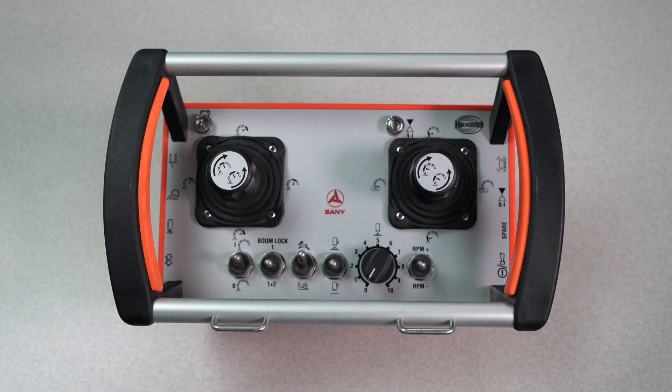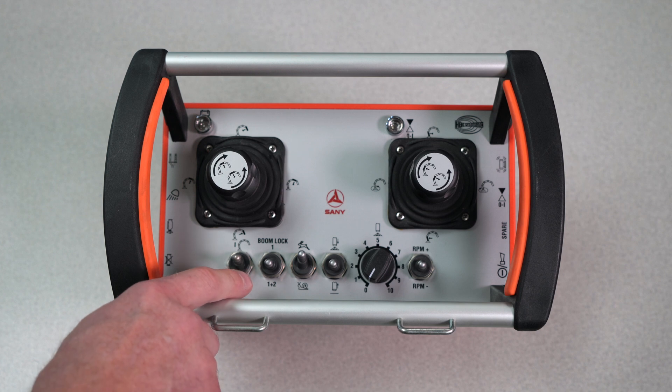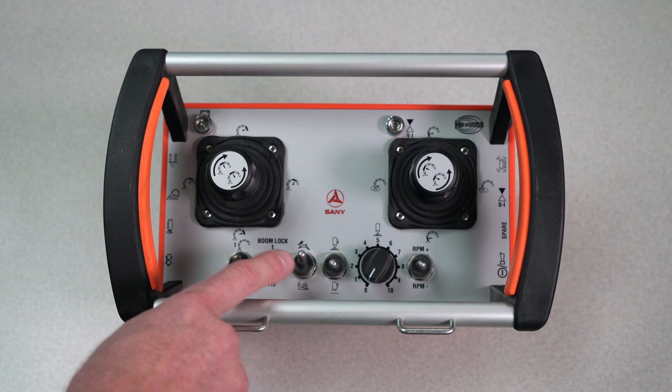Across the bottom, we have some toggle switches. We have our boom on and off. You can lock boom one, our booms one and two. In the middle position, they are all unlocked. You have your rabbit and snail boom speeds.